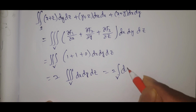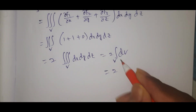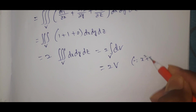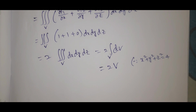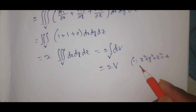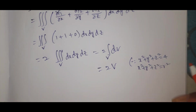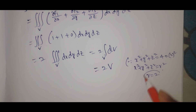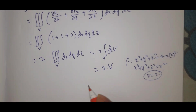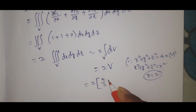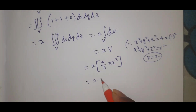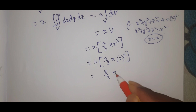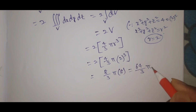This simplifies to 2 times the integral over V of dv, which is 2 times the volume of the sphere. Comparing x squared plus y squared plus z squared equals 4 with the standard form x squared plus y squared plus z squared equals r squared, we get r equals 2. The volume of the sphere is (4/3)π r cubed, so the answer is 2 times (4/3)π times 2 cubed, which equals 2 times (4/3)π times 8, giving 64π/3.